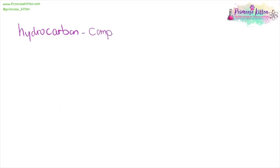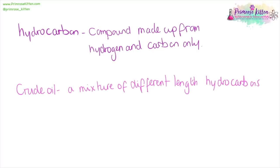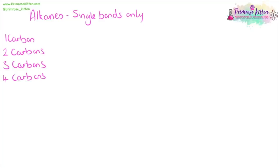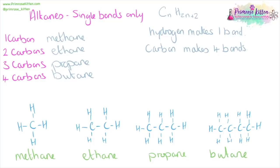A hydrocarbon is a compound made up of hydrogen and carbon only, and nothing else. Crude oil is a mixture of different length hydrocarbons. Alkanes are hydrocarbons with single bonds only, and the general formula for them is CₙH₂ₙ₊₂. The first one with one carbon is methane, two carbons is ethane, three carbons is propane, and four carbons is butane. When drawing organic compounds, the important thing to remember is that hydrogen always makes one bond only, and carbon always makes four bonds only. Because these are alkanes, they're only ever going to have single bonds. Each line here represents a bond, which is a pair of electrons — a covalent bond.